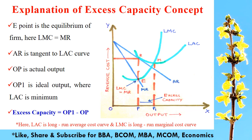The actual output is OP and the ideal output is OP1, where LAC is minimum. As we know, excess capacity is the optimum output minus actual output. So the difference between OP1 and OP is the excess capacity.